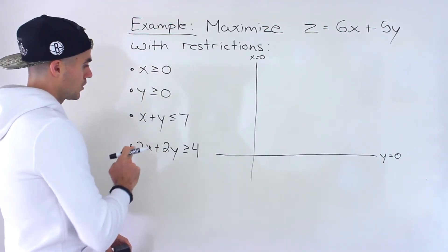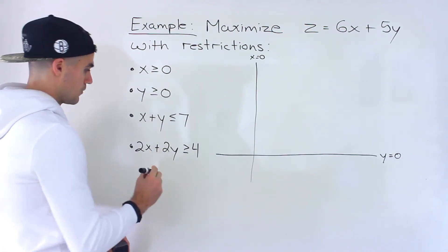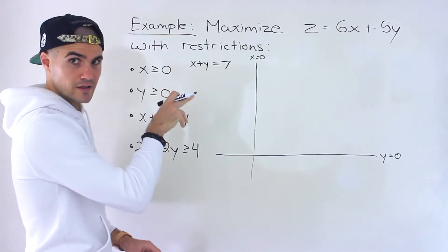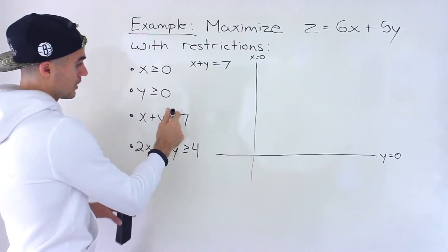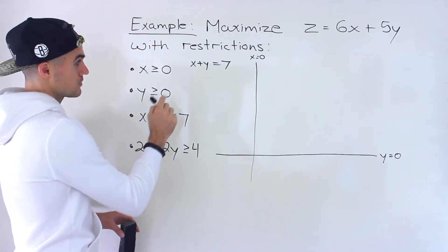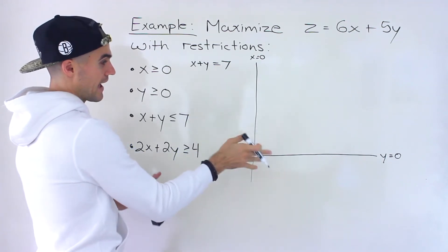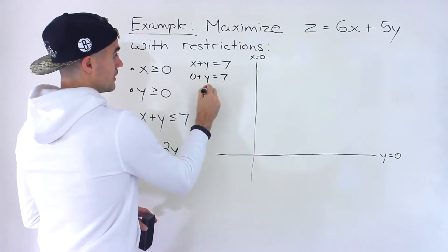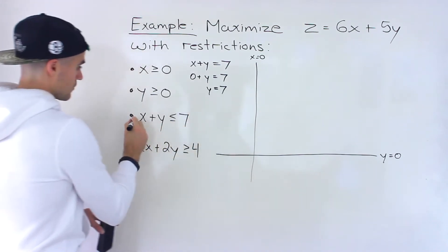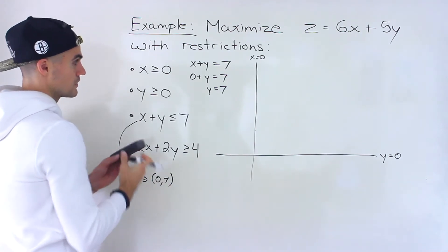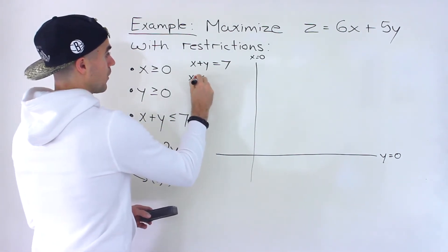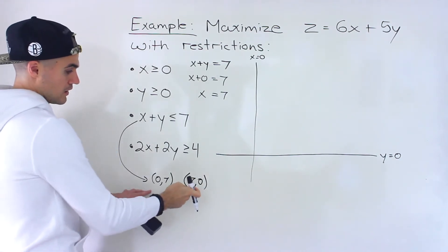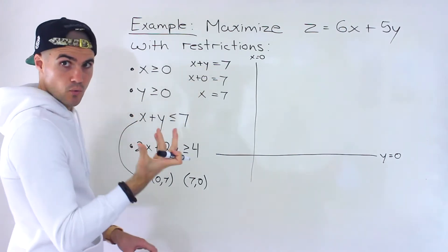For x plus y less than or equal to seven, I'm first going to work with x plus y equals seven to graph the line, then bring back the inequality. To find the y-intercept, plug in zero for x and we get seven — so the point is (0, 7). For the x-intercept, plug in zero for y and x equals seven — so the point is (7, 0). Those are the intercepts of the line x plus y equals seven.